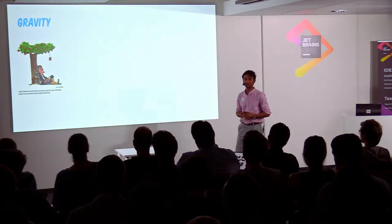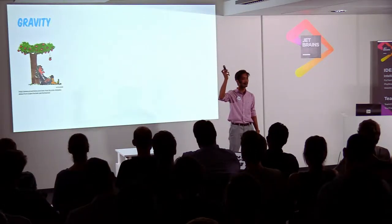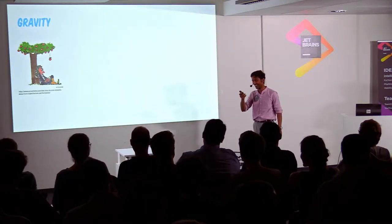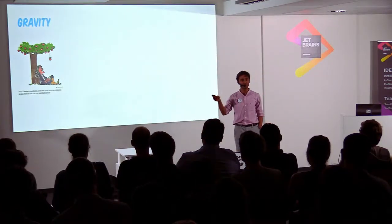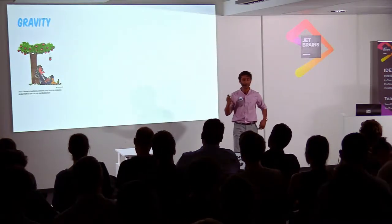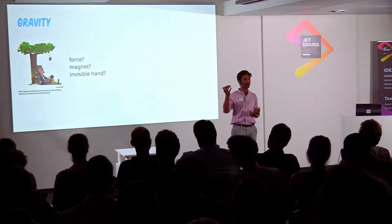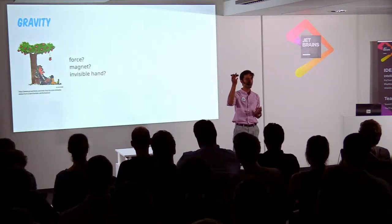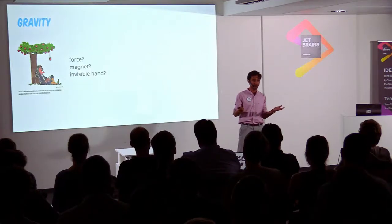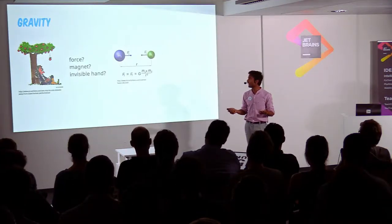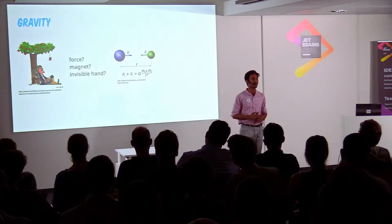Take gravity, for instance. You and I can both agree that if I drop this pointer, it is going to fall down. Gravity is a fact — we can all observe that it just happens. Let's come up with hypotheses for why gravity actually is: there is a force of attraction pulling this pointer towards the Earth, or there are some magnets pulling it, or some invisible hand doing the trick. Luckily for us, Isaac Newton did this test and came up with a law called Newton's gravitational law. Notice how it gives us a mathematical premise.